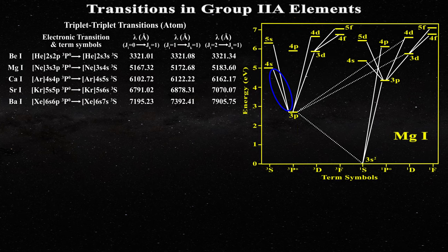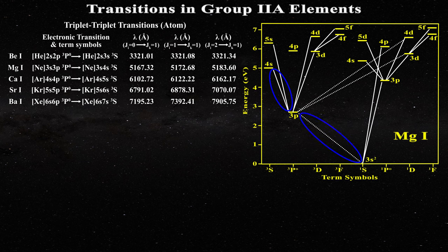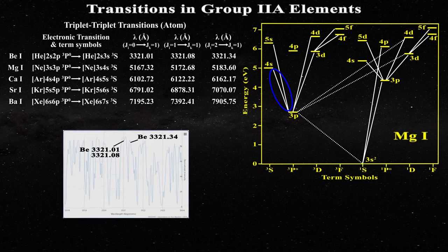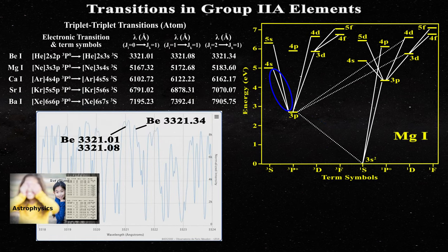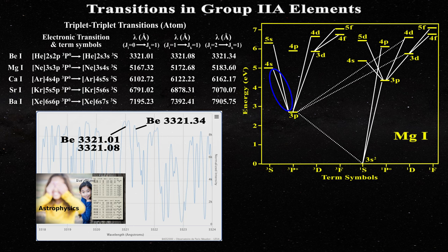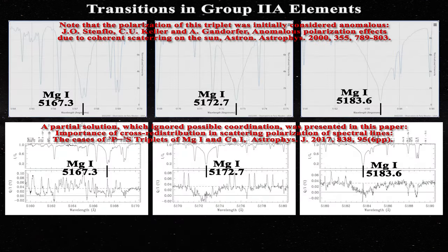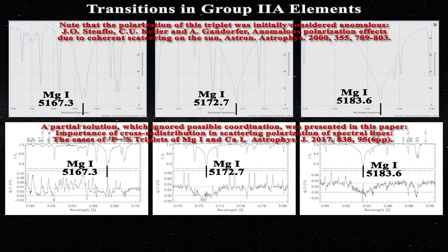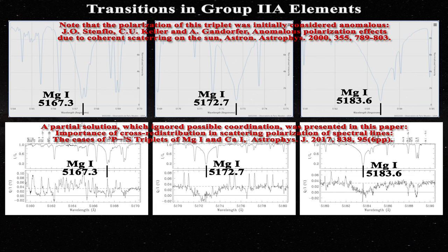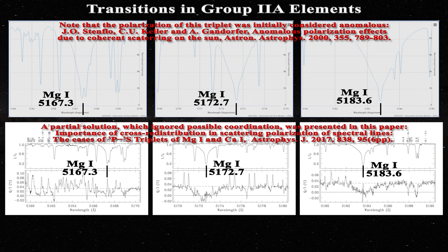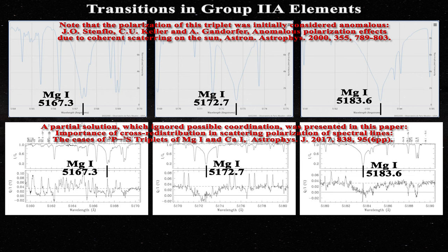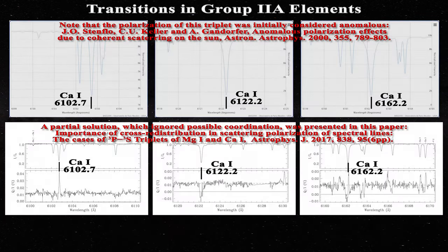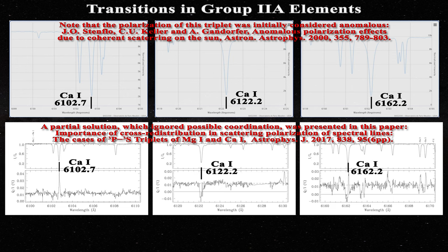Finally we come to the triplet to triplet transitions. These were selected because they arise after an electron has first executed the forbidden singlet to triplet transition just covered. Once again the presence of the beryllium triplet to triplet transitions had been highlighted in this video and here is the associated spectrum. Next here are the magnesium triplet to triplet transitions. Note that all these lines are present in the second solar spectrum but not particularly strong. As with the magnesium one forbidden transition at 4571 angstroms the magnesium triplet lines have been used extensively to monitor chromospheric activity as noted in this paper.